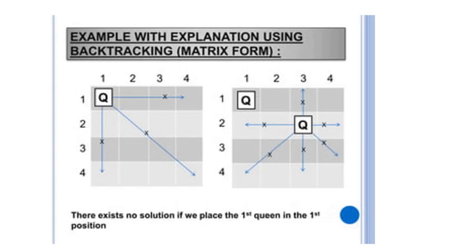The first queen is placed in the first column, first row. Moving to Queen 2, we can't place it in the first column because Queen 1 already occupies it. Each column is occupied by each queen. If we place Queen 2 in the second position, it will be attacked by Queen 1 diagonally. So we move Queen 2 to the third column.